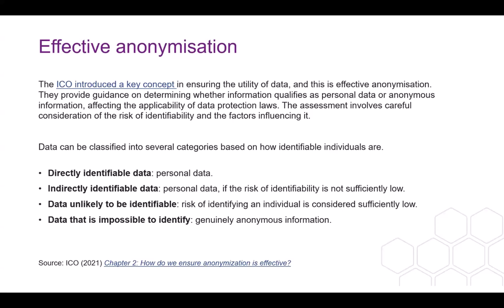With the concept of effective anonymization comes several different categories based on how identifiable an individual is. This includes directly identifiable data — personal data; indirectly identifiable data — still personal data but with a lower risk of identifiability; data that is unlikely to be identifiable, where the risk is considered sufficiently low; and then data that is impossible to identify, representing genuinely anonymous information. The ICO guidance provides a graph on page nine showing data existing as a spectrum.